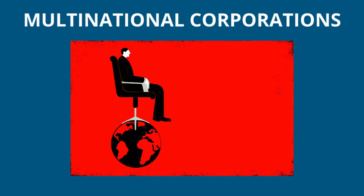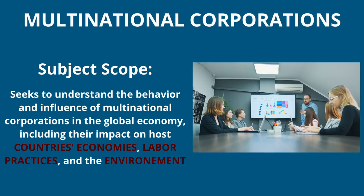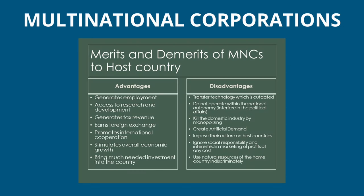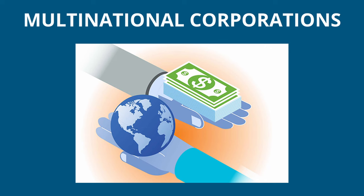Our third area is multinational corporations. This area examines how multinational corporate activities affect the relationship between states and the global economy as a whole. Since multinational corporations operate in multiple countries, they can be seen as a product or an extension of globalization. Proponents argue that they can bring benefits such as increased employment, technology transfer, and economic growth. However, critics contend that they can also lead to increased inequality, environmental degradation, and reduced policy autonomy for governments. IPE also looks at how foreign investment can influence economic development, technology transfer, and employment, as well as the ways countries can regulate foreign investment to ensure it benefits their own economic interests.